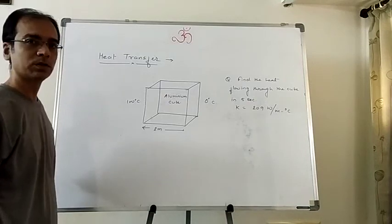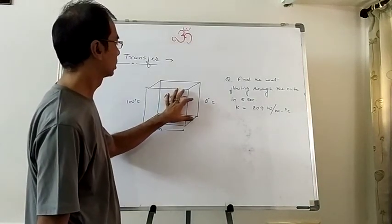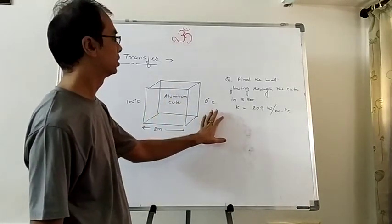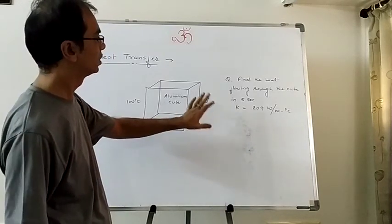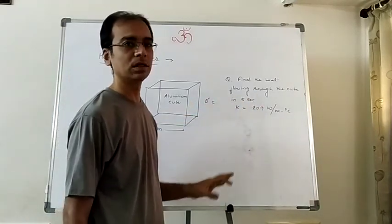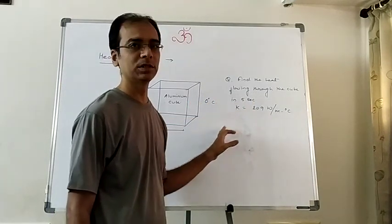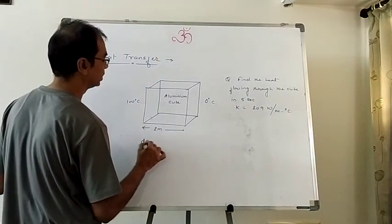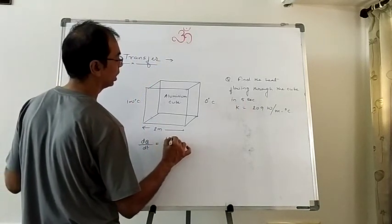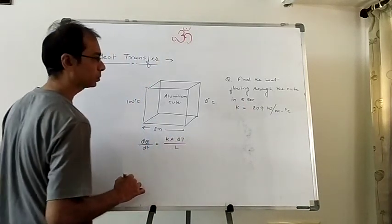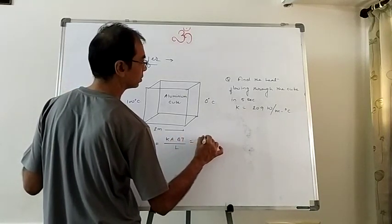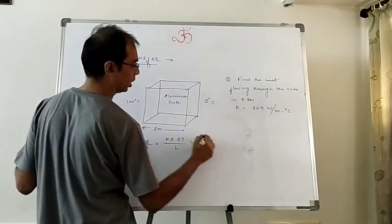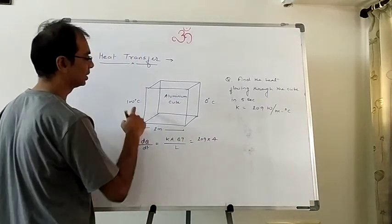Let us see the first question. This is an aluminum cube of side 2 meters. One side temperature is 100°C and the other side is 0°C. We have to find the heat flowing through the cube in 5 seconds. The thermal conductivity K is given. We know that dQ/dt = K·A·ΔT/L. K is given, the area of the face is 2² = 4 m², and ΔT = 100.